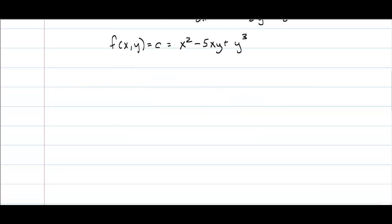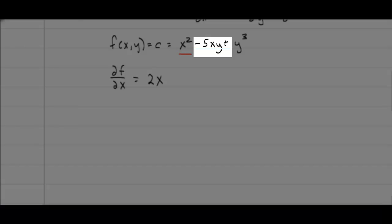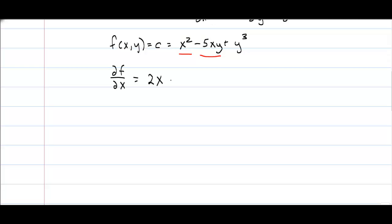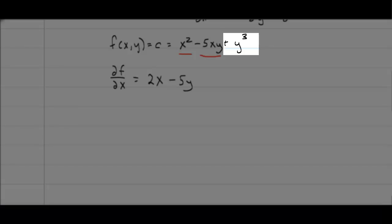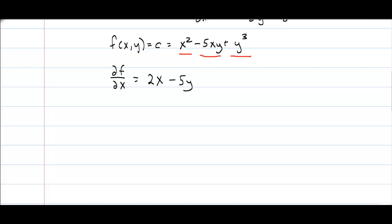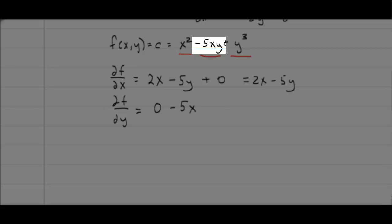To find the partial of f with respect to x, we treat y like a constant. The first term x² gives 2x. For -5xy, treating y as a constant, we get -5y. The y³ term is a constant with respect to x, so its derivative is 0. Thus the partial of f with respect to x is 2x - 5y. Taking the partial with respect to y: the first term goes to 0, we get -5x from the second term, and 3y² from the third term.